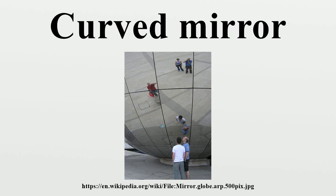Convex mirrors are preferred in vehicles because they give an upright, though diminished, image. Also, they provide a wider field of view as they are curved outwards. These mirrors are often found in the hallways of various buildings, including hospitals, hotels, schools, stores, and apartment buildings. They are usually mounted on a wall or ceiling where hallways intersect each other or where they make sharp turns.